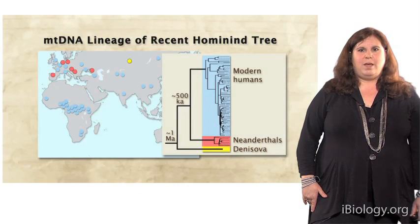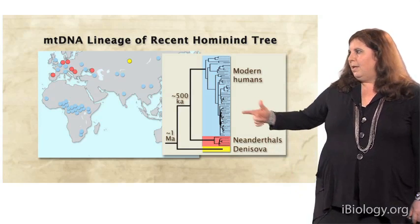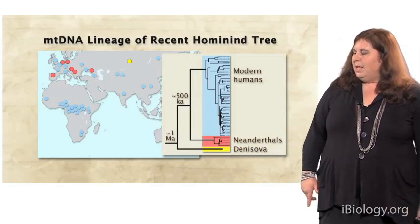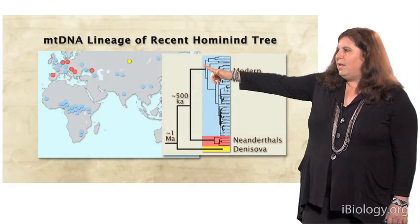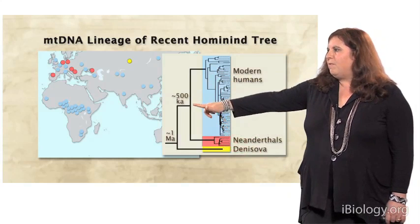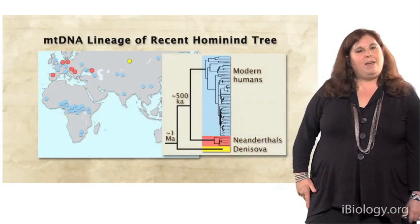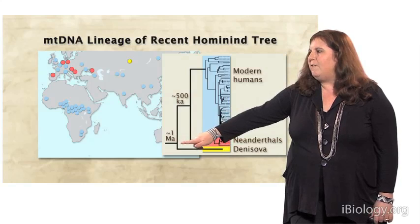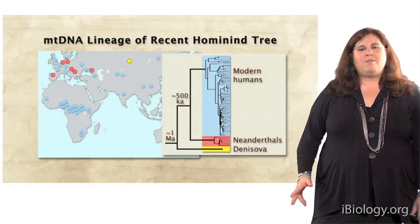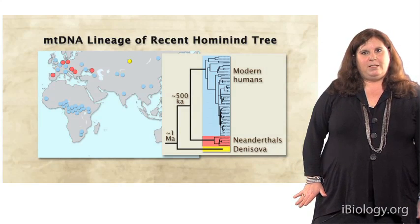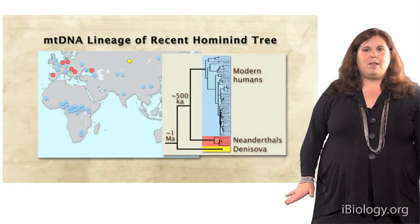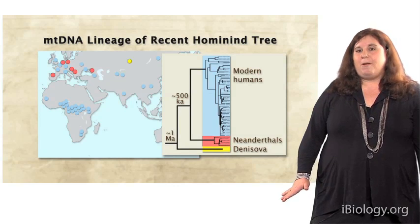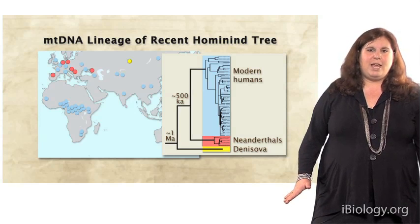Here I'm presenting a phylogenetic tree based on mitochondrial DNA variation, comparing modern humans shown in blue, to Neanderthals shown in red, and the Denisova individual shown in yellow. The time to most recent common ancestry in humans is about 200,000 years ago. The time to most recent common ancestry between humans and Neanderthals is about 500,000 years ago for the mitochondrial DNA lineages. And the time to most recent common ancestry with the Denisova mitochondrial DNA lineages is about 1,000,000 years ago. From the mitochondrial DNA perspective, there's no evidence of admixture with anatomically modern humans. Neanderthal sequences are clearly distinct, and Denisova appears to be distinct from Neanderthals, diverging even earlier.